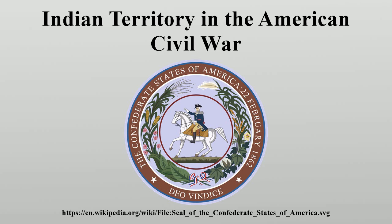In 1862, Union General James G. Blunt ordered Colonel William Weir to lead an expedition into the Indian Territory. The expedition included five white regiments, two Indian regiments and two artillery battalions. The main objective of the expedition was to escort the Indian refugees who had fled to Kansas back to their homes in Indian Territory. A secondary objective was to hold the territory for the Union. Weir's expedition met with early success at the Battle of Locust Grove. The expedition camped at Locust Grove for two weeks, waiting for a Union supply train.